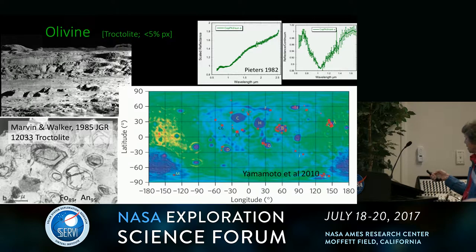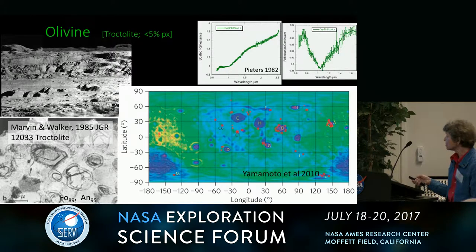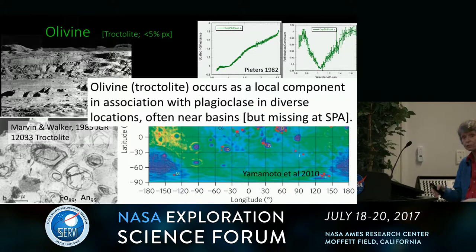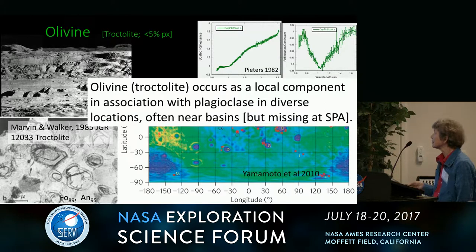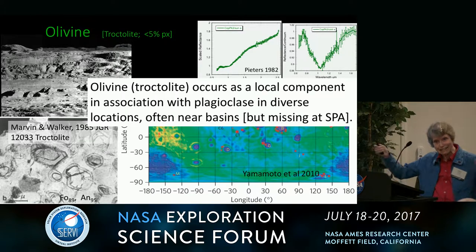So we have a distribution of olivine. The olivine is associated with environments where there's plagioclase. It doesn't have the massive outcrop that we see with anorthosite, but it is global in distribution. I contend that pretty much all the olivine we see is troctolite, occurring as a local component in association with plagioclase in diverse locations — but it's missing in SPA, the deepest and biggest basin we have.